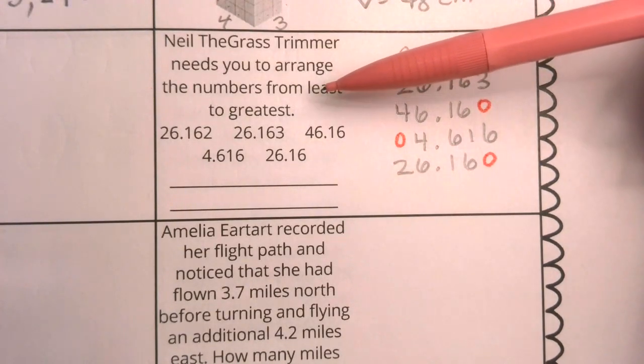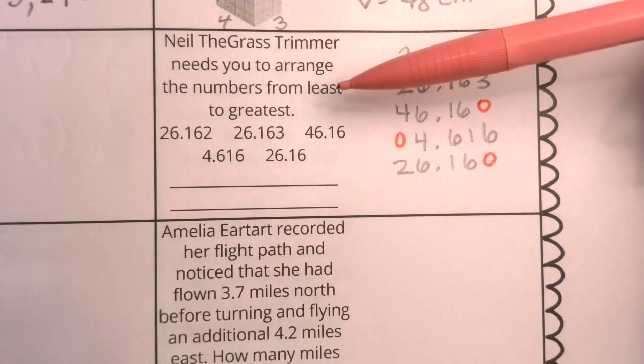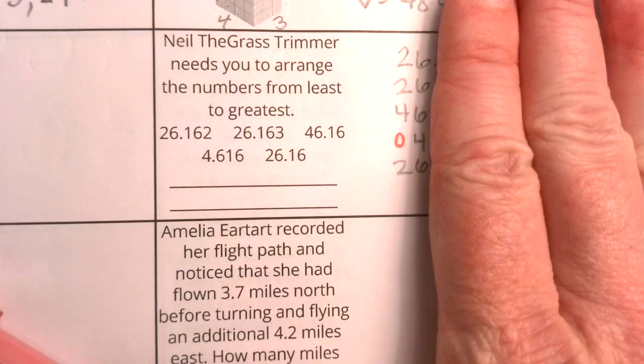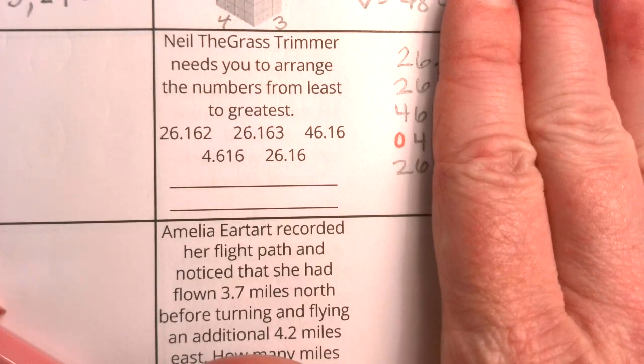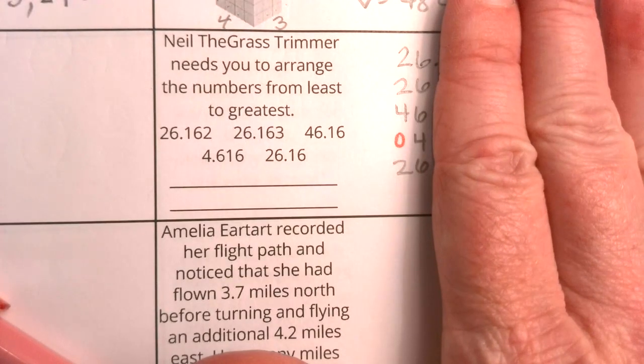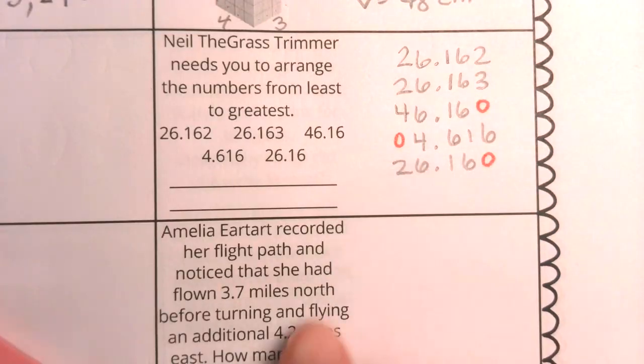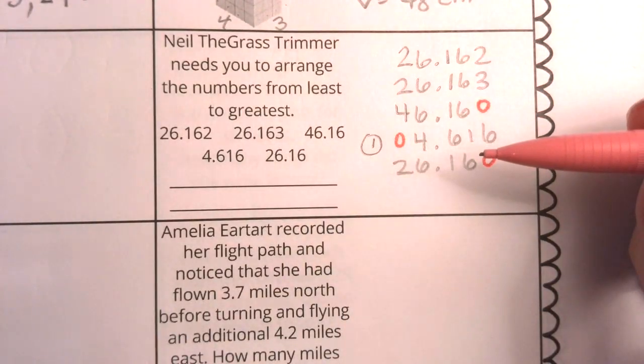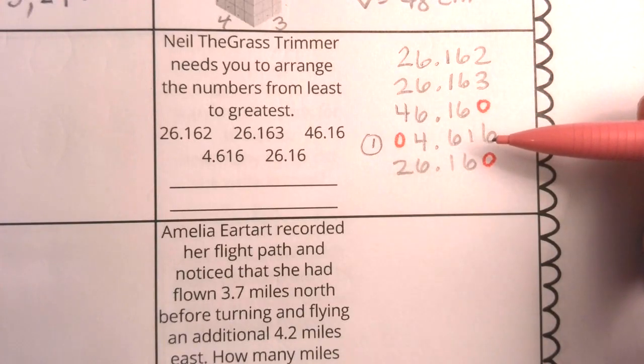Now I want to know the least first. The least is actually going to be the first number in this. And even just taking a look at the whole number values, I right away have a winner for which one is the least. The least is this one right here that only has a four in my whole number position. So that's for sure the least.